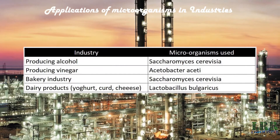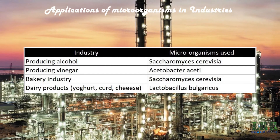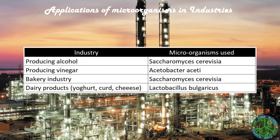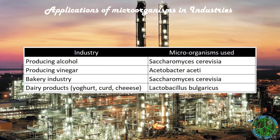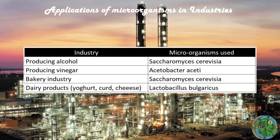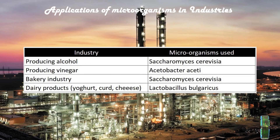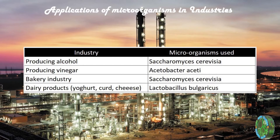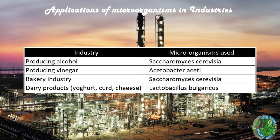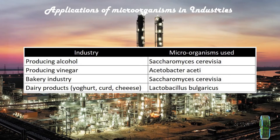Applications of microorganisms in industries: Saccharomyces is used to produce alcohol and in the bakery industry. Acetobacter is used to produce vinegar, and to produce dairy products like yogurt and curd, Lactobacillus is used.